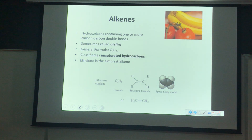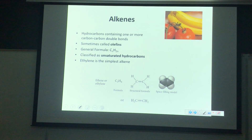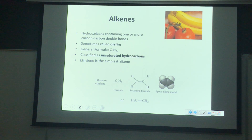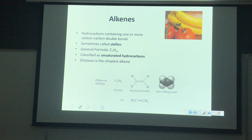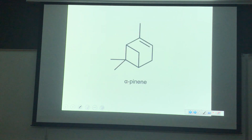That brings us to the end of chapter 12! On to chapter 13: unsaturated hydrocarbons. Unsaturated hydrocarbons are hydrocarbons that have double bonds and triple bonds — so we've got our alkenes and our alkynes. Saturated hydrocarbons are our alkanes, which were in chapter 12.